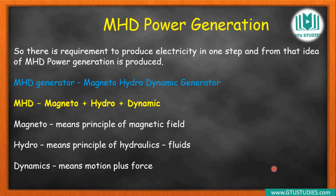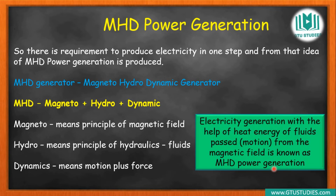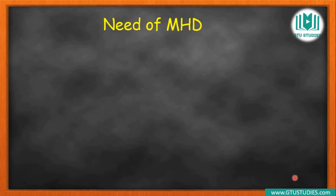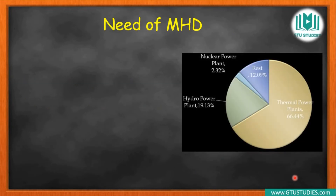The fluid is in motion, and through electromagnetic force, electricity is produced. Because there is motion and force involved, it is called Dynamic. So the full name is Magneto-Hydro-Dynamic Generator. In short, electricity generation with the help of heat energy of fluids moving through a magnetic field is known as MHD power generation.